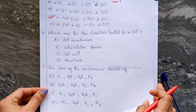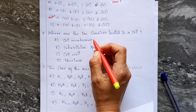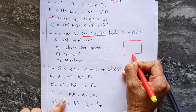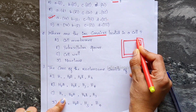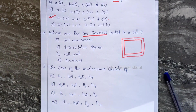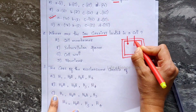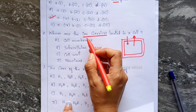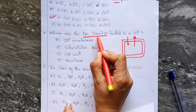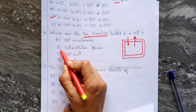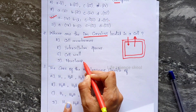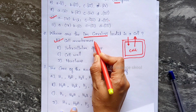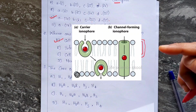Moving on to the next question: where are the ion carriers located in a cell? The cell is surrounded by a cell membrane. For transport of ions across the membrane, there should be some carriers. The options are: cell membrane, intracellular spaces, cell wall, nucleus. Since the cell is surrounded by a cell membrane, option A — cell membrane — is the correct answer.